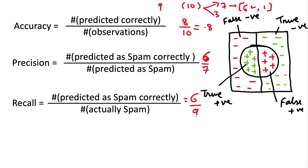Looking at the diagram, the entire rectangular region contains the 10 prediction values, and the circular region denotes the messages that were predicted as spam — positive here means spam, since our aim is to find spams. Outside the circular region are all the messages the model said are non-spam. Within the circle, some are correctly labeled in green (true positives) and some are wrongly labeled (false positives). For the negative examples — messages the model said are not spam — some are correctly labeled (true negatives) and some incorrectly labeled in red (false negatives).